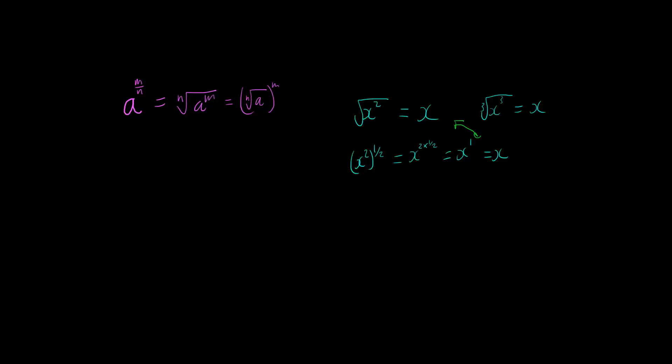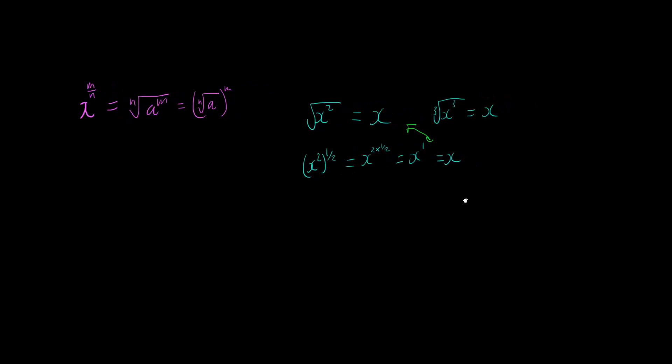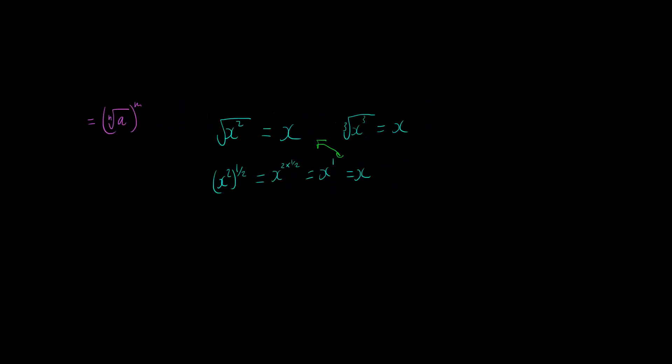We can also do the same for the cubed version so I can take x cubed and raise it to the power of one-third and that gives me x to the power of three times one-third which gives me x to the one which is just x.